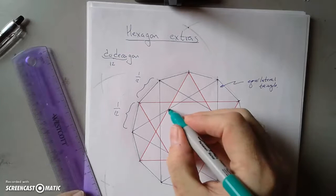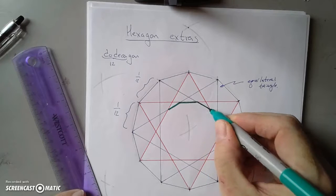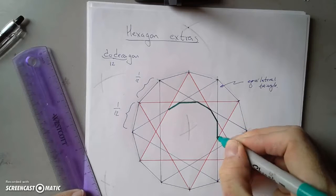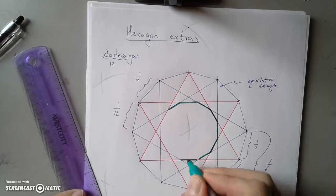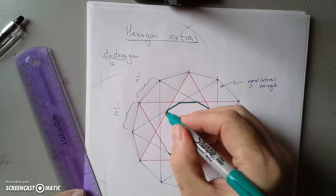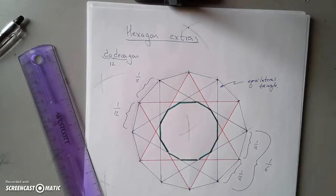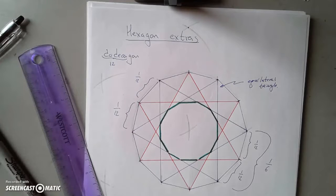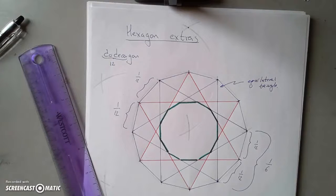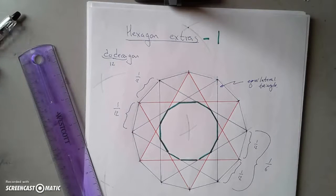A couple more neat things to notice: in the middle here you get another dodecagon kind of for free. And there are also various other stars around this figure. So here are some extras — I'll call this 'Hexagon Extras One' because there's quite a bit more we can do.